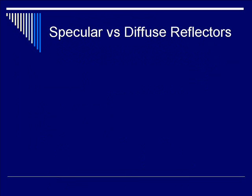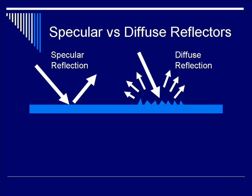Let's talk about the differences between specular and diffuse reflectors. In the diagram for specular reflection, the surface is very smooth. As the incoming beam hits the interface, you get a singular beam that is reflected at the same angle as the incidence angle. Specular reflection is responsible for the bright appearance of fiber structures such as the diaphragm, bladder wall, and tendons.